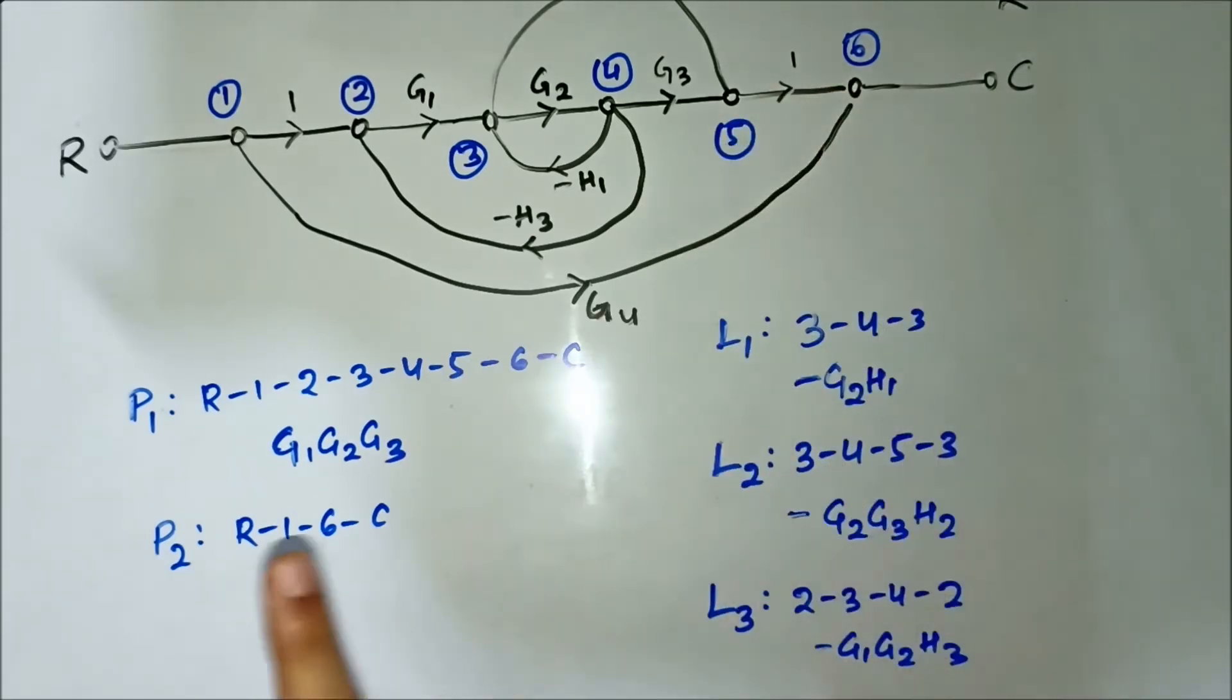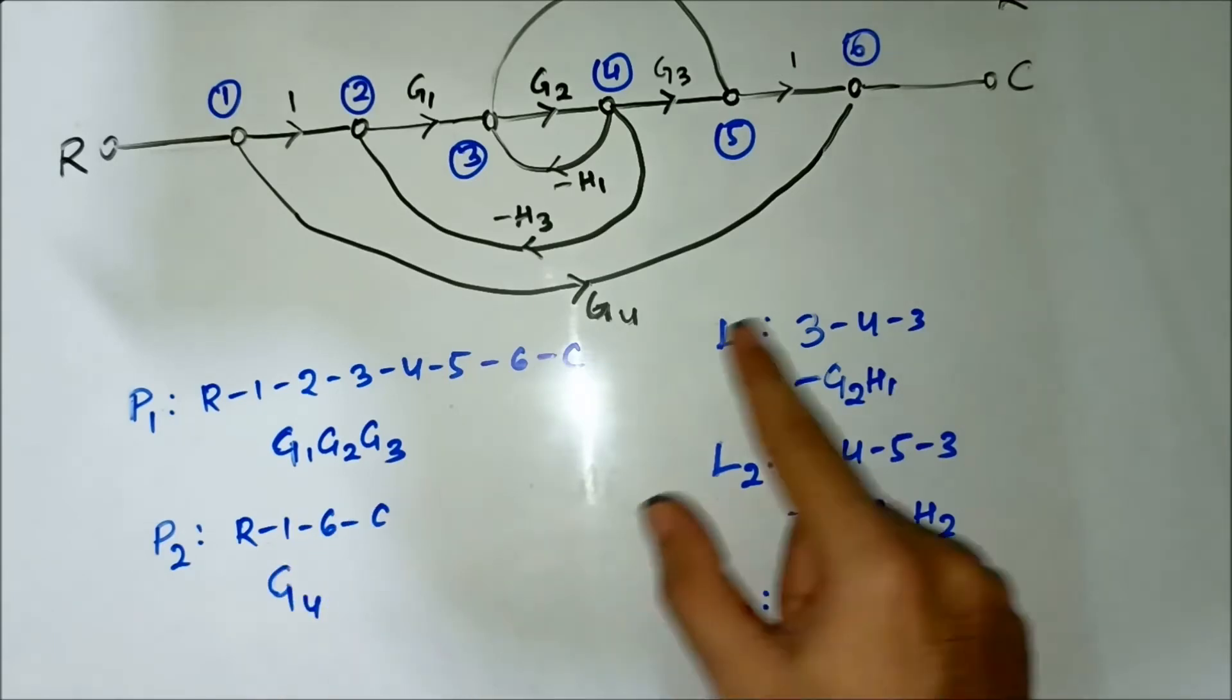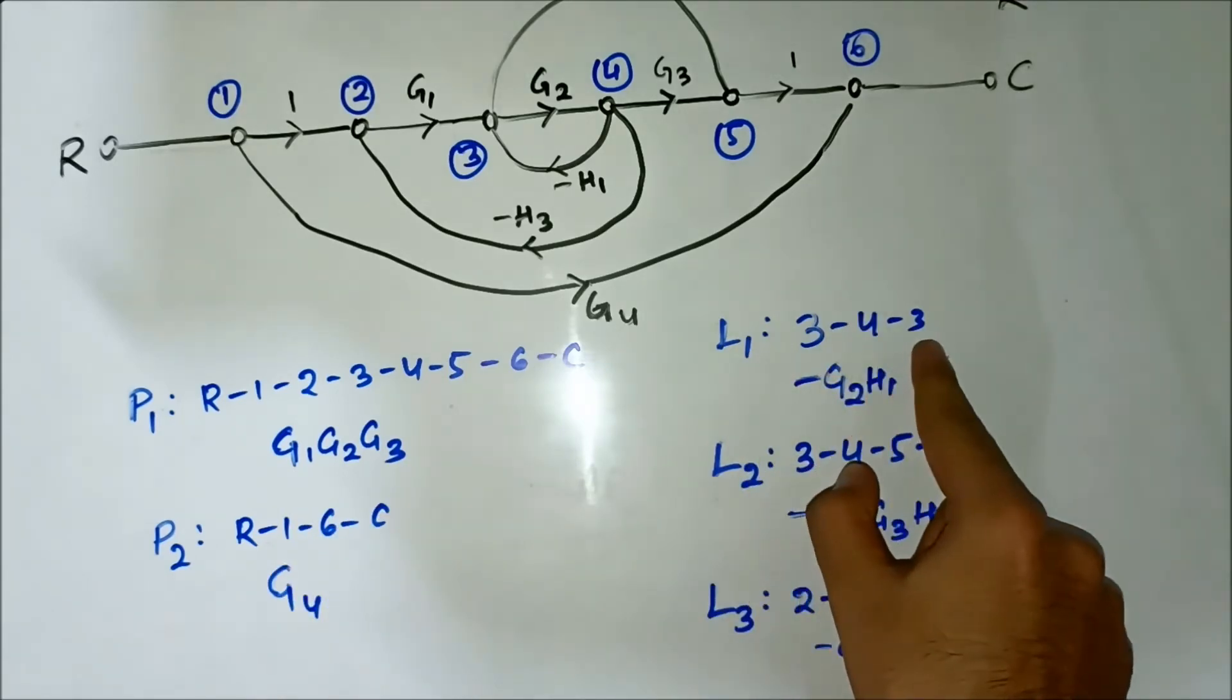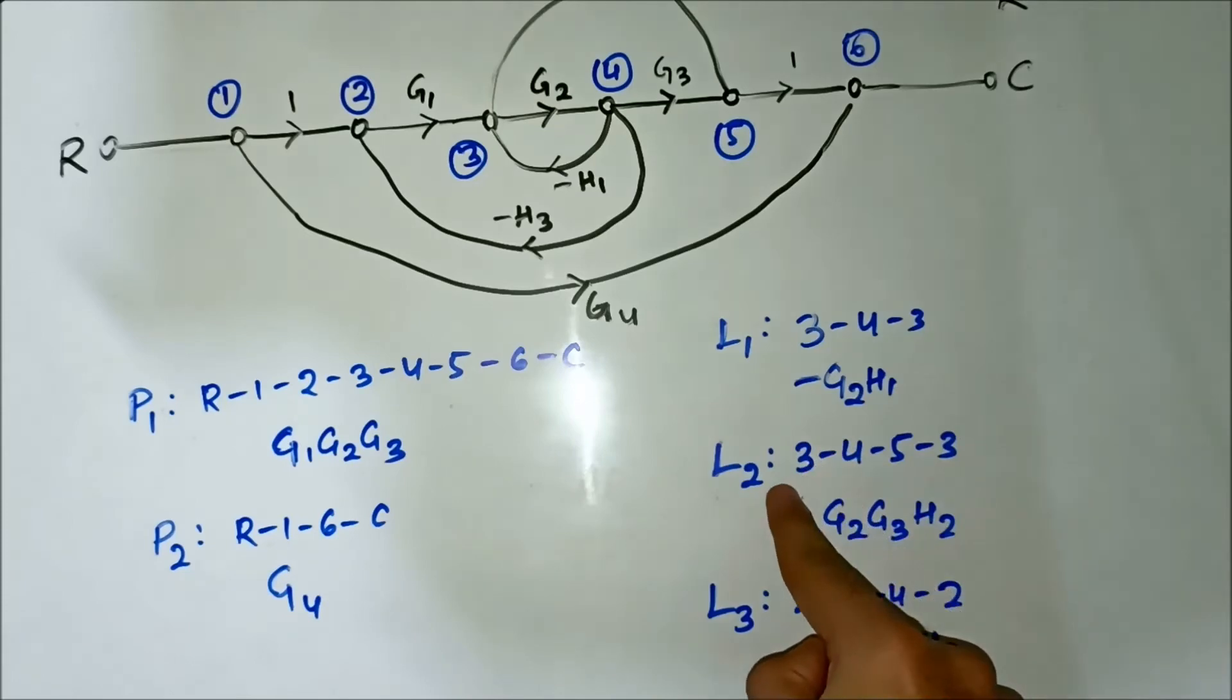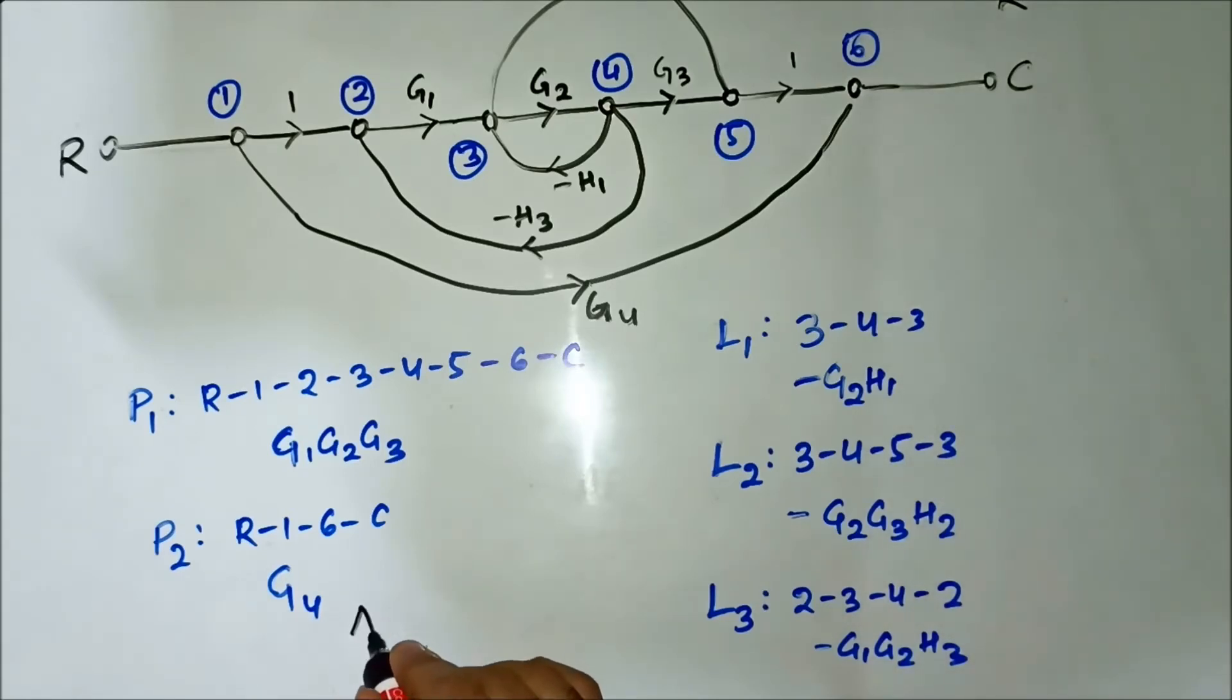P2: R-1-6-C. L1: there is no common node. L2: there is no common node. L3: there is no common node. So the path factor for P2 is 1 minus L1 plus L2 plus L3, the loop gains.